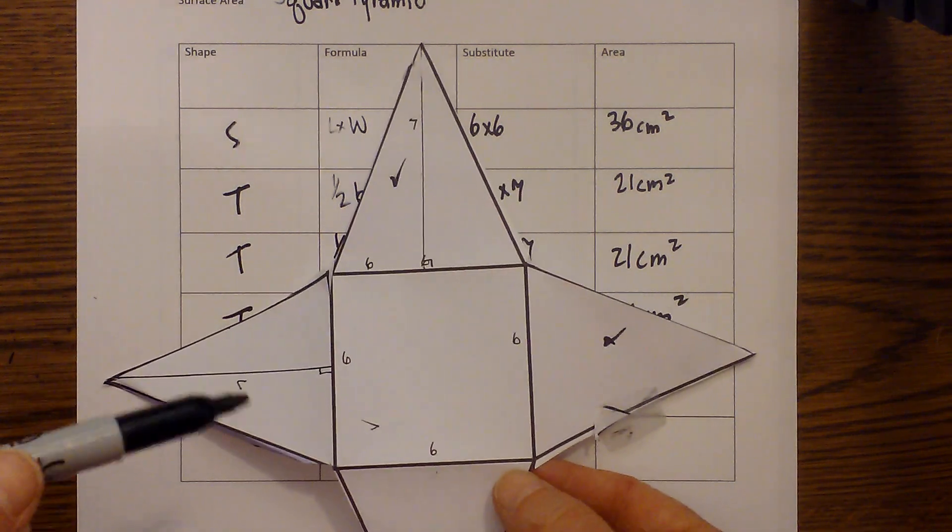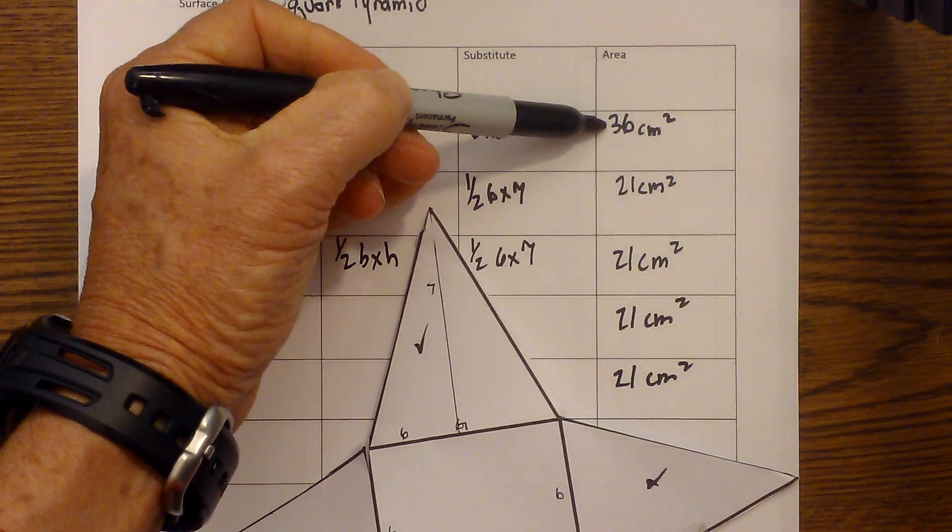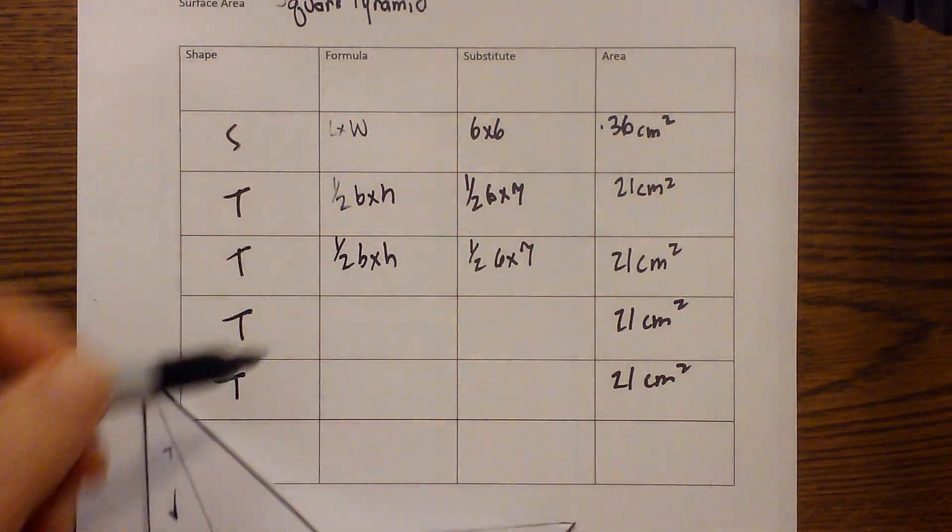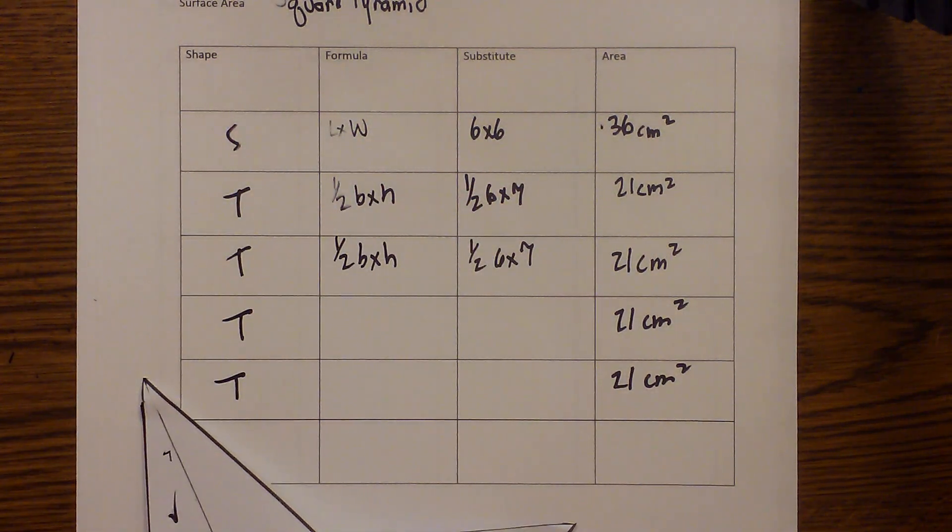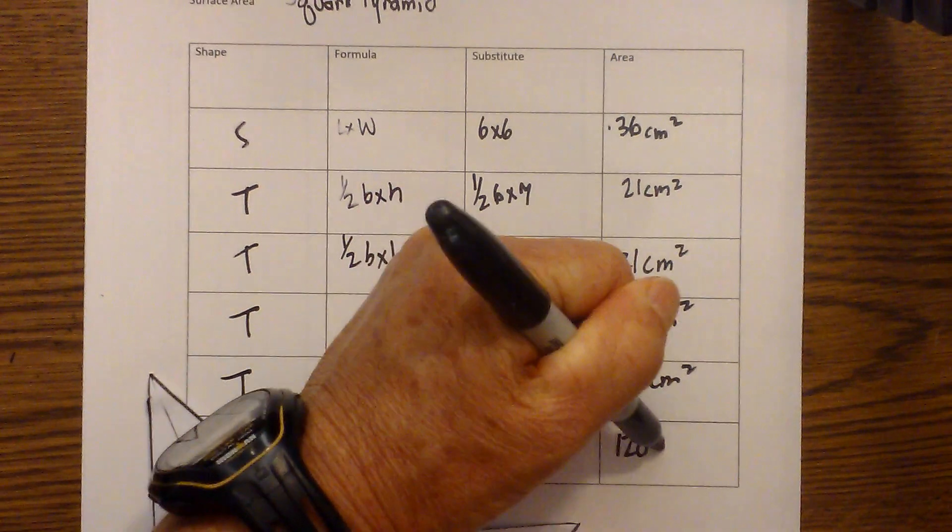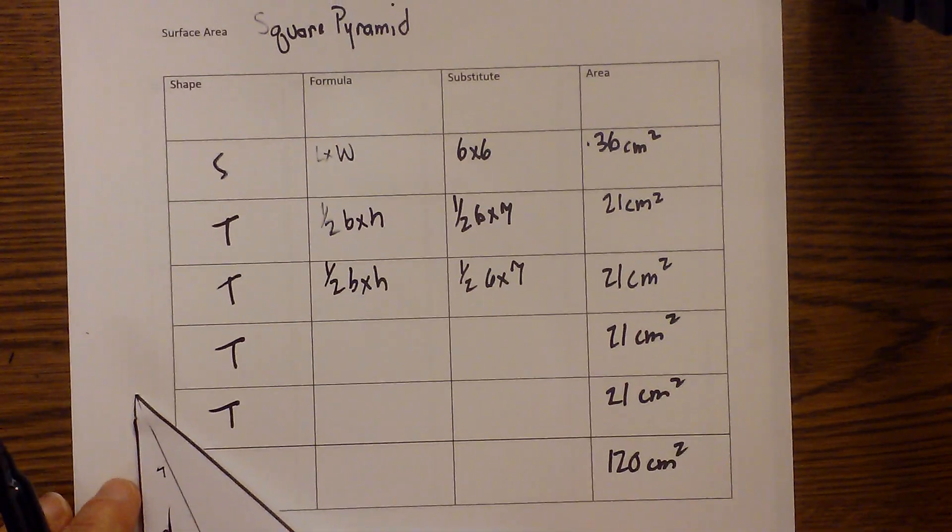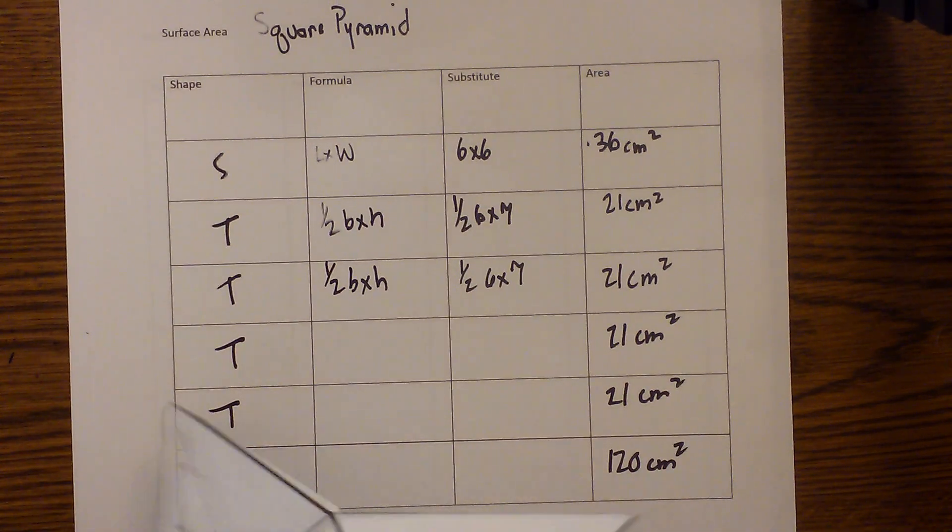So let's double check. Make sure we have all our shapes. We have the base here. We have four sides. One, two, three, four. Now all I do is total that up. So I'll take 21 times 4 and that's 84 plus 36 and that equals 120 centimeters squared is the total surface area of a square pyramid.